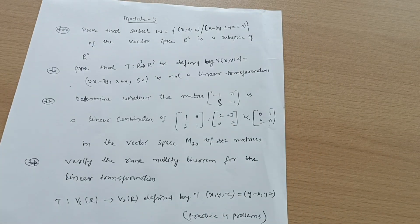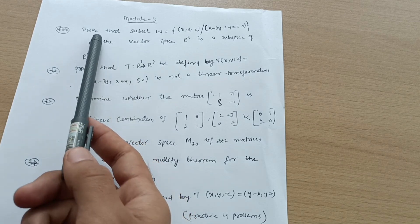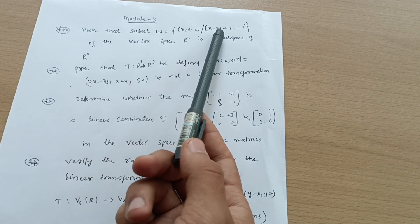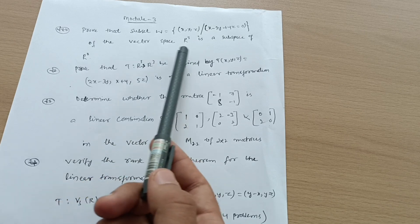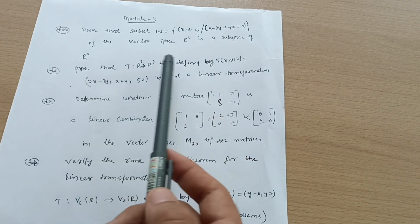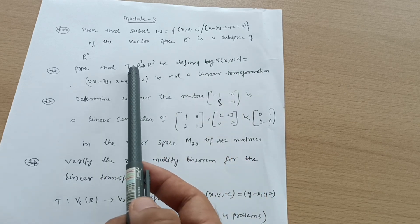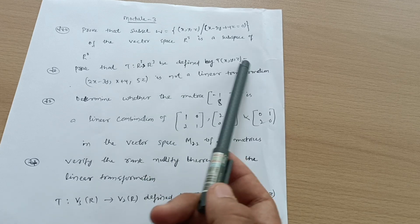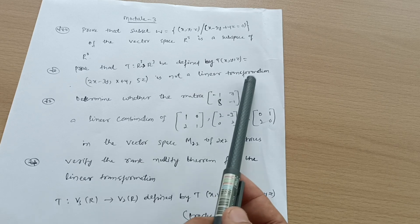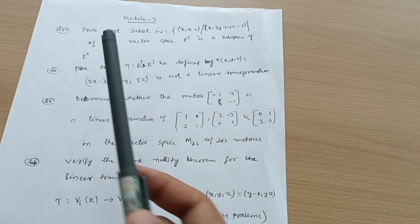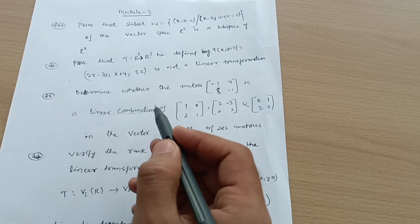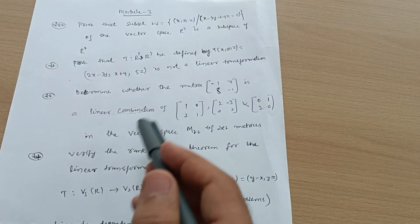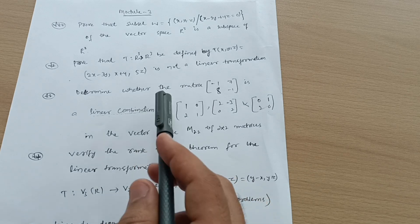Module 3 is the newly introduced chapter for 22-scheme students — vector subspaces. Cover questions like: prove that the subset W equals {(x, y, z) | x minus 3y plus 4z equals 0} of the vector space R³ is a subspace of R³. Practice three to four questions on subspace topics. Next, cover linear transformation questions: prove that T from R³ to R³ defined by T(x, y, z) equals (2x minus 3y, x plus 4, 5z) is not a linear transformation. Also determine whether a matrix is a linear combination of given matrices — practice two to three problems from this concept.